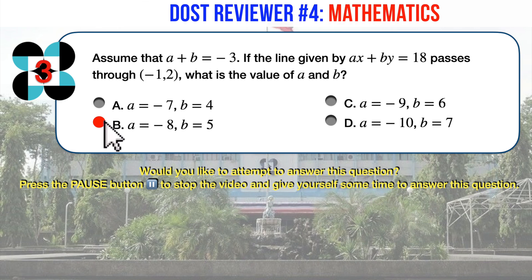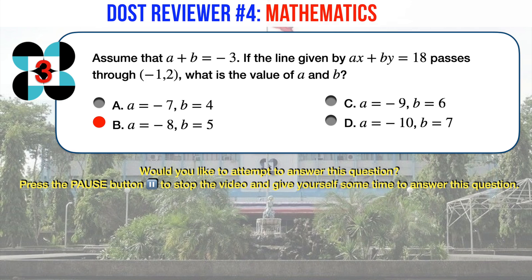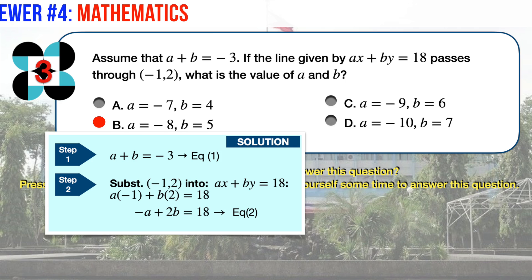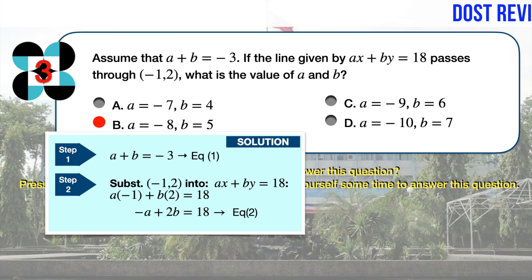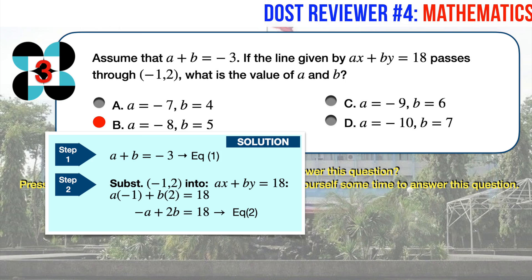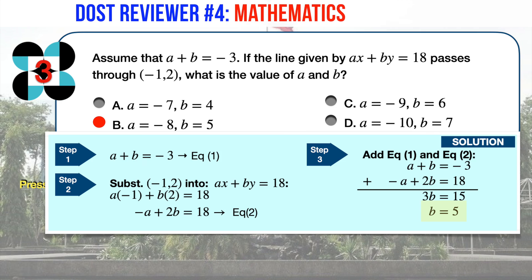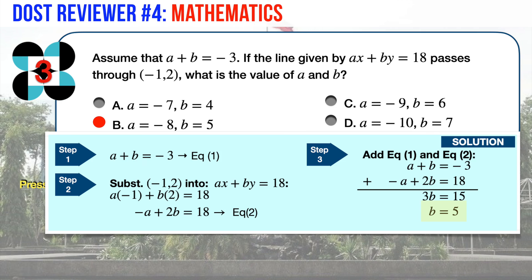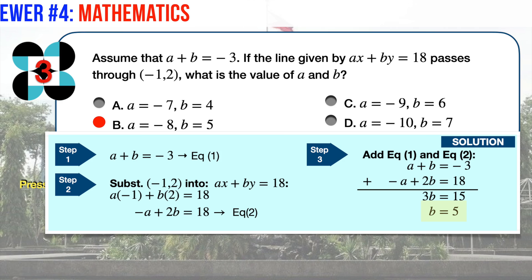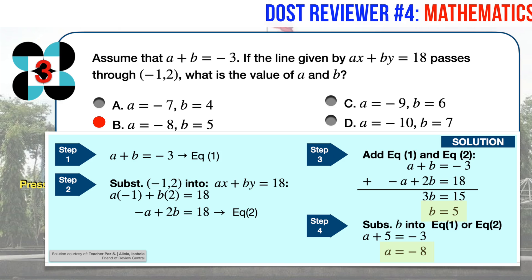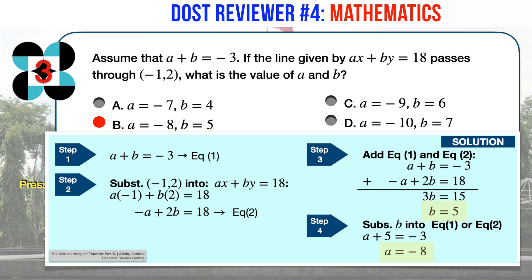The correct answer is B: A equals minus 8 and B equals 5. Let's label the first given equation as equation 1. Next, substitute the given coordinates into the second equation, since the line passes through that point. Label the resulting equation as equation 2. Adding equations 1 and 2 eliminates A, allowing us to solve for B equals 5. Substituting B into equation 1, we quickly solve A to be minus 8.